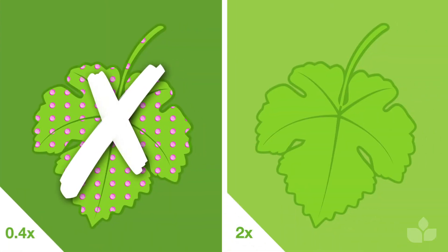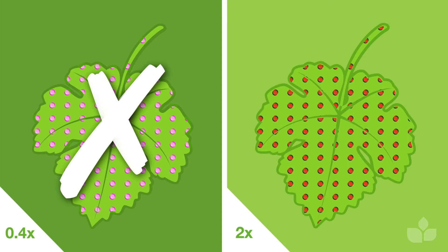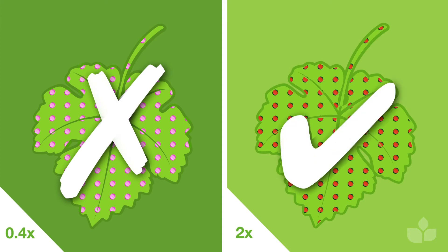When using water volumes lower than the point of runoff, the product mixing rate should be increased to apply the same volume of chemical per hectare or per 100 metres of row. For example, if your actual spray volume is half of what you would use to reach point of runoff, then you should double the labelled mixing rate per 100 litres of water.